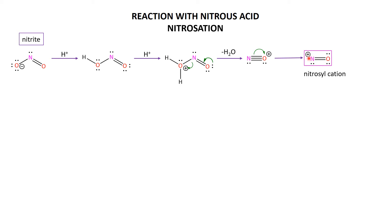Nitrogen doesn't like positives either, but it can't do much about it within the molecule since it's bonded to oxygen, so it's going to want to react quite readily. This species, whether you draw it with a triple bond or a double bond, is isoelectronic to carbon monoxide, which gives it some very important reactivity comparisons to be discussed later.